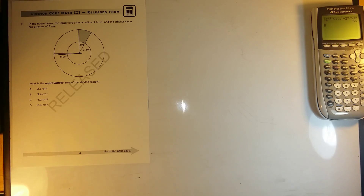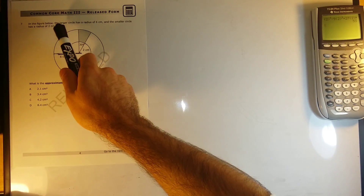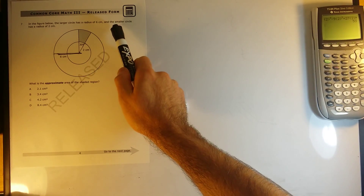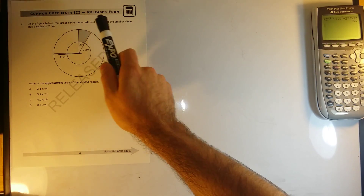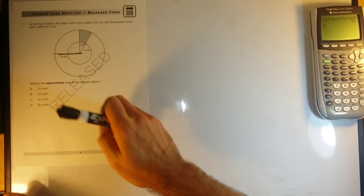Problem number seven reads: in the figure below, the larger circle has a radius of six centimeters, and the smaller circle has a radius of two centimeters.